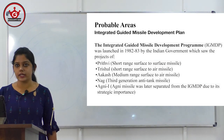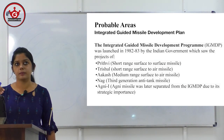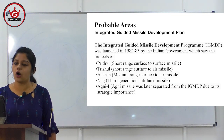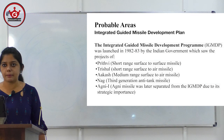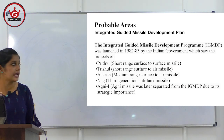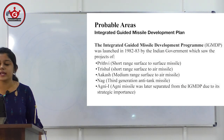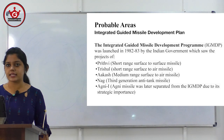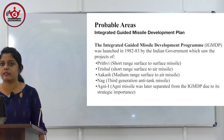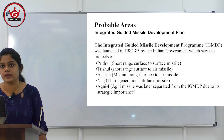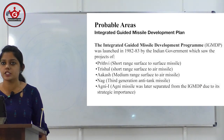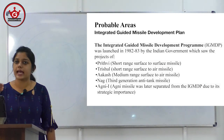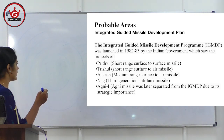Soon after independence, we focused on particular kinds of missile development. Earlier we had a project called Project Valiant, etc. All these projects were unsuccessful or failure projects. So the government came up with a new project in 1983 called the Integrated Guided Missile Development Program, and it was headed by Dr. APJ Abdul Kalam. He was in the forefront in developing our first missile, that is Prithvi. The objective of that program was to develop five missiles.